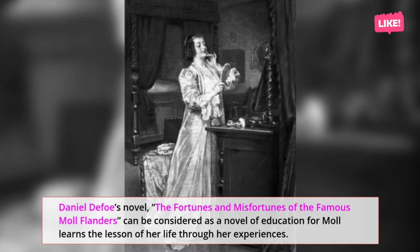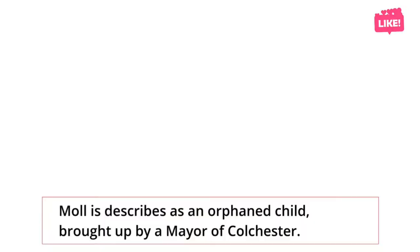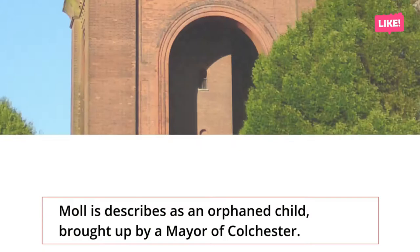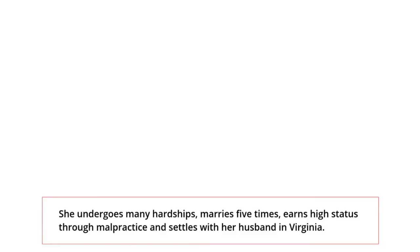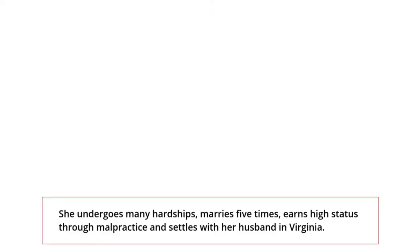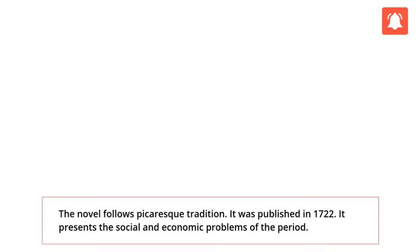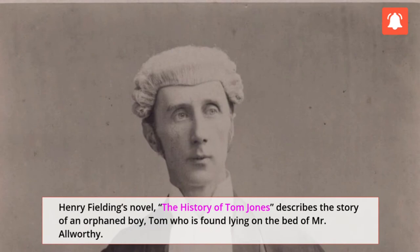Daniel Defoe's novel The Fortunes and Misfortunes of the Famous Moll Flanders can be considered as a novel of education, for Moll learns the lesson of her life through her experiences. Moll is described as an orphan child brought up by a mayor of Colchester. She undergoes many hardships, marries five times, earns high status through malpractice, and settles with her husband in Virginia. The novel follows the picaresque tradition and was published in 1722.